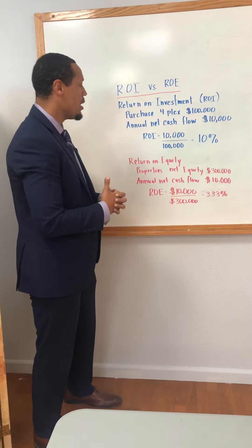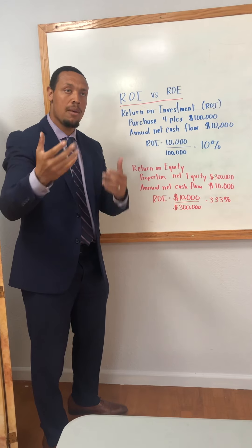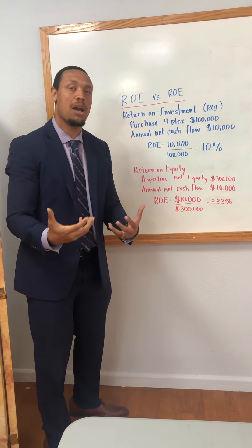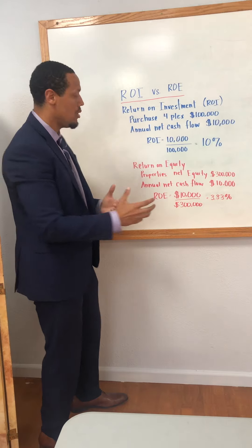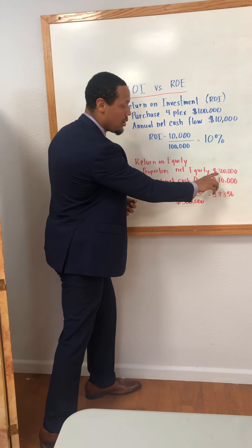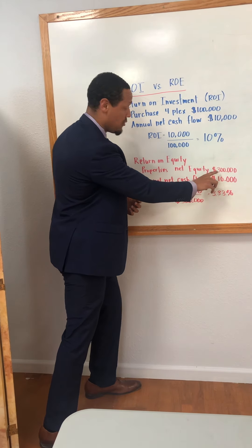Now, you've owned the property for a couple of years, and especially in the Bay Area, if you've owned a property for a couple of years, usually that property goes up in value. That property's net equity — the amount left over when you look at the value minus all the debts on the property — that amount left over is called net equity. Let's say the property has gone up in value, and the net equity of the property is $300,000.